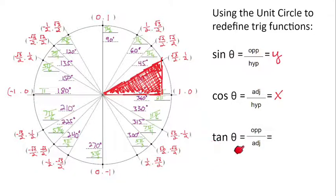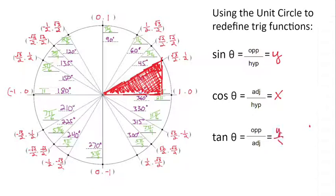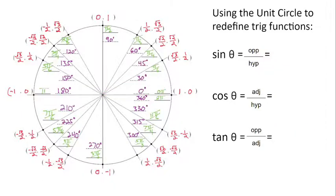For tangent, that's opposite over adjacent, which is y over x. So I can just take the y-coordinate and divide it by the x-coordinate. For example, 1/2 divided by √3/2 would give us the tangent — we'll talk about how to divide those fractions in a moment.